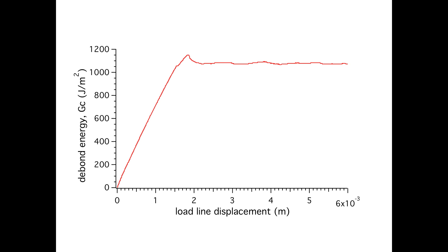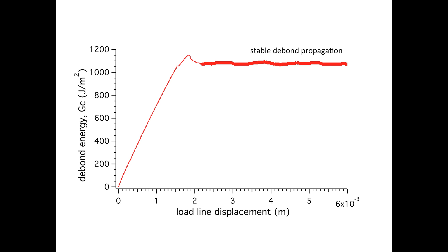Now the only valid portion of the calculation is the part over which stable debond propagation occurred, illustrated here. We should only take these values of the calculation to evaluate our average and standard deviation of the measurement. In this case, the result is 1078 plus or minus 5 joules per meter squared.